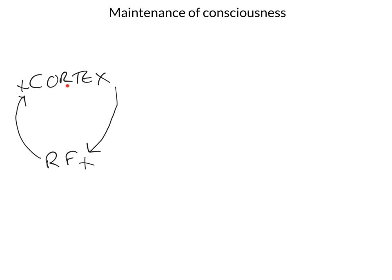Cortical lesions can cause loss of consciousness, as can brainstem lesions which can affect the reticular formation. So if you lose one of these components, you will lose consciousness. Likewise, if you interrupt the connections between them, this will also disrupt your conscious level. And we see this in diffuse axonal injury and other serious head injuries.